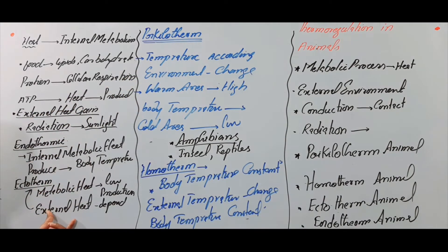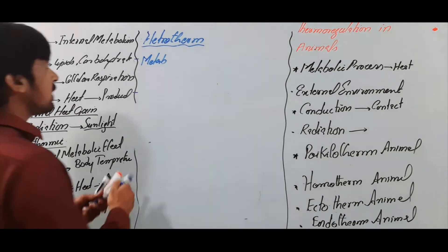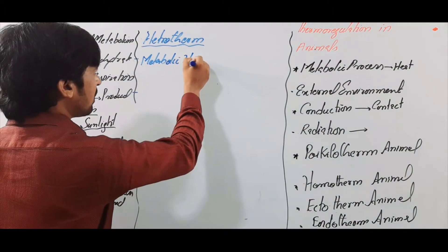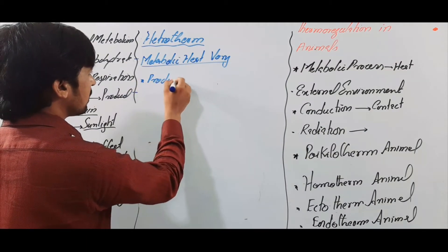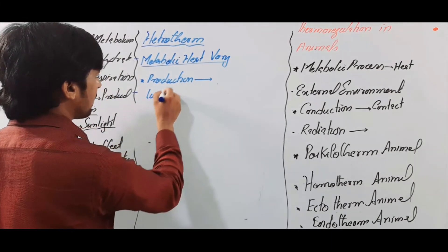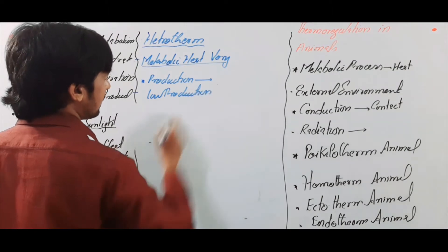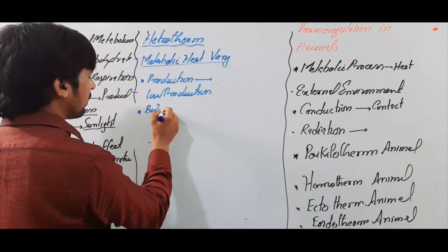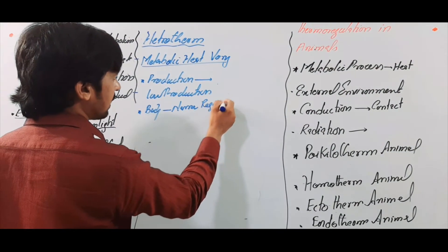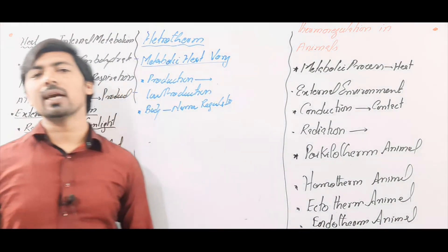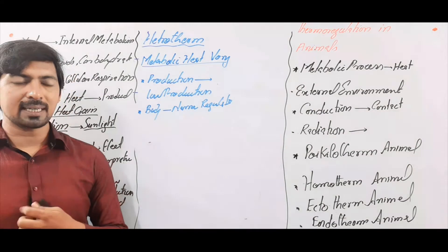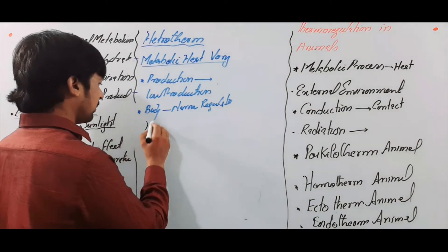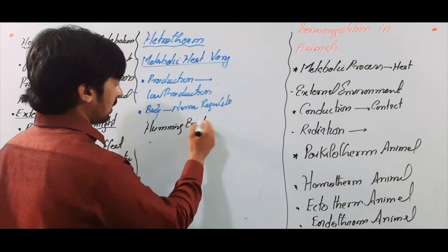Heterothermic organisms mein metabolic heat vary karti hai - kabhi bahut zyada production hoti hai, kabhi low production hoti hai, aur is wajah se body temperature ek narrow range mein rehta hai lekin regulated nahi hota. Heat production regulated nahi hoti aur temperature regulation bhi nahi hota. Iska example hai hummingbird.